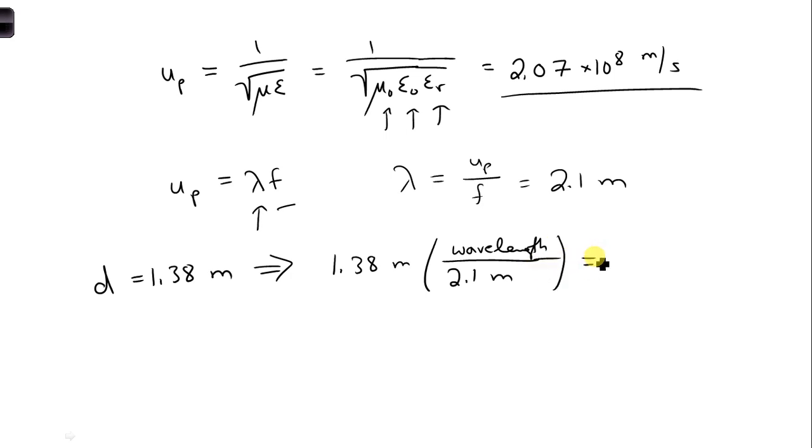Always make sure the units work out. So you'd have meters would cancel, you'd end up with wavelengths. And this turns out to be 2 thirds of a wavelength.